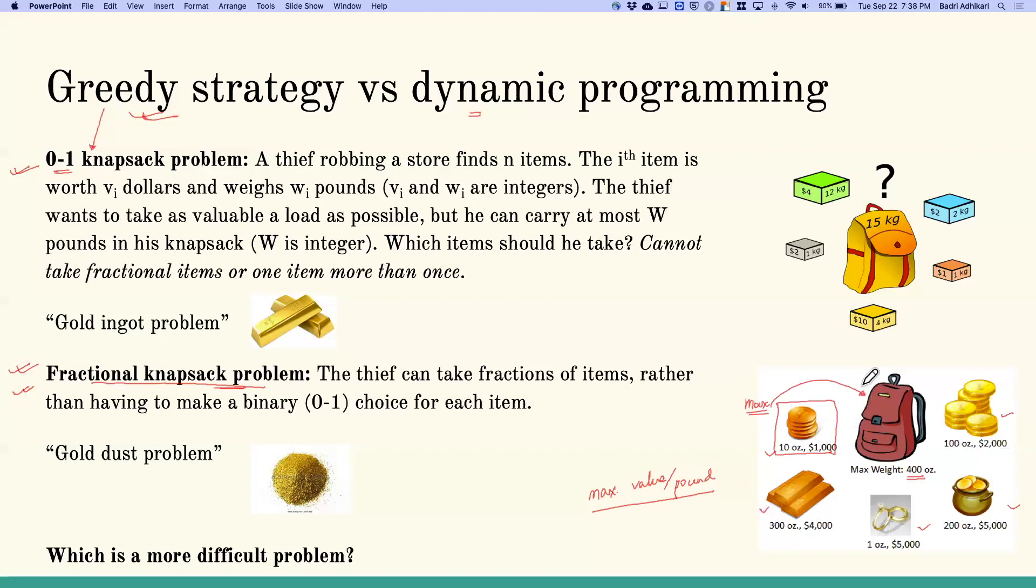If the knapsack is full, then we are done. The problem is solved. If the knapsack is not full, then we load all of that item into the knapsack and find the next item with the next maximum value per pound. Solving the fractional knapsack problem using greedy strategy is pretty straightforward.